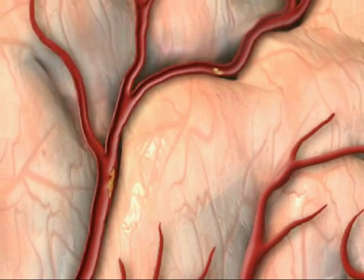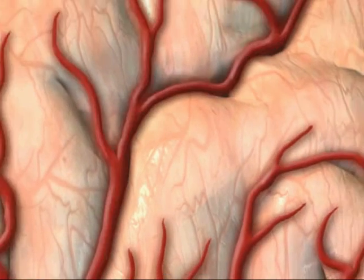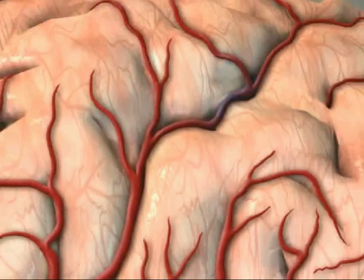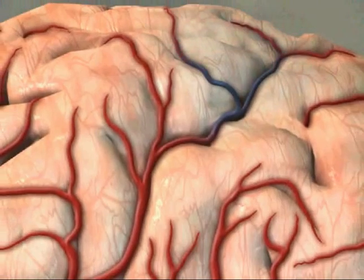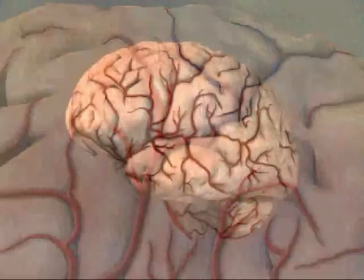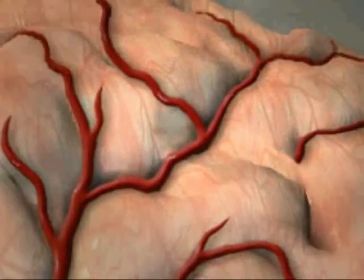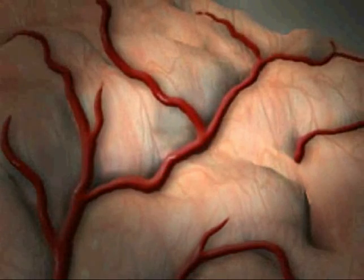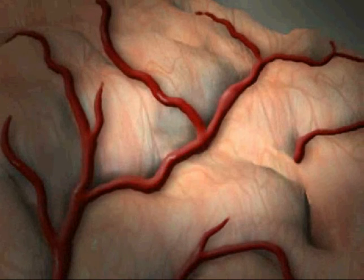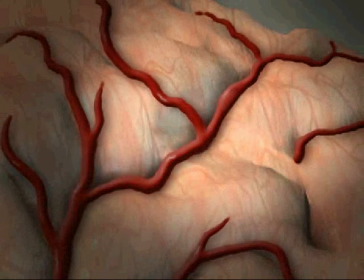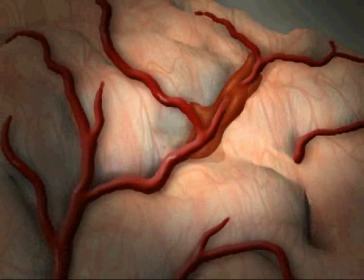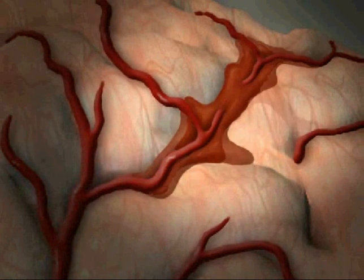This is called a thrombotic stroke. Continual exposure to high blood pressure may also cause a blood vessel to burst, leading to a hemorrhagic stroke.